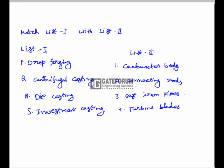Matching List 1 (processes) with List 2 (products): Drop forging is used to make connecting rods, so P matches with 2. Centrifugal casting is used to make cast iron pipes, so Q matches with 3. Die casting is used to make carburetor bodies, so R matches with 1. Investment casting is used to make turbine blades, so S matches with 4.